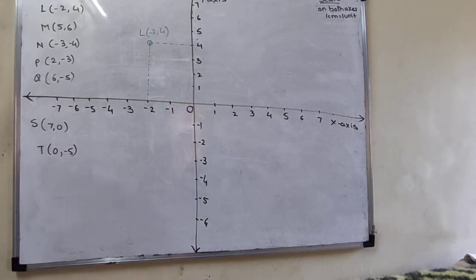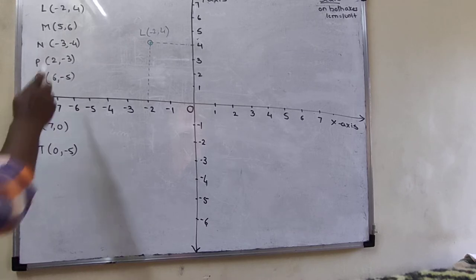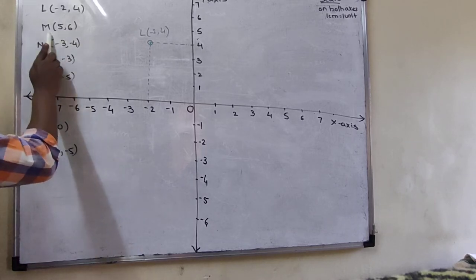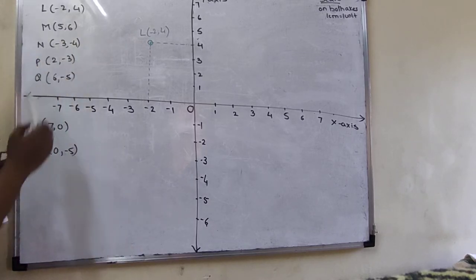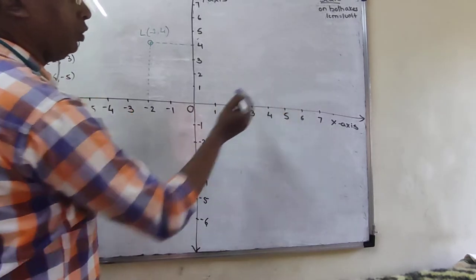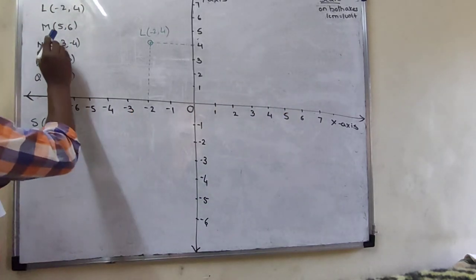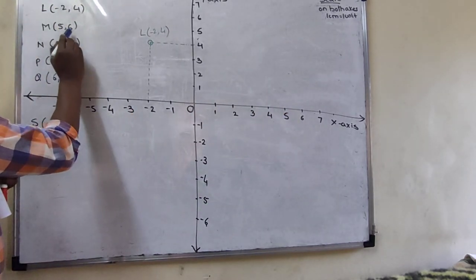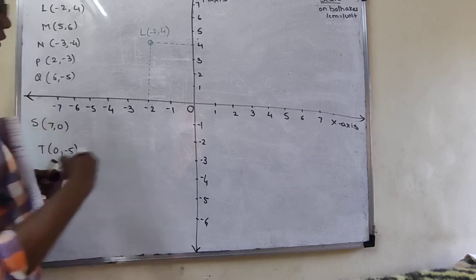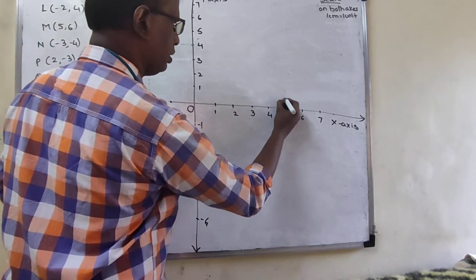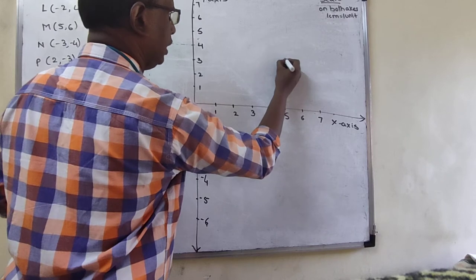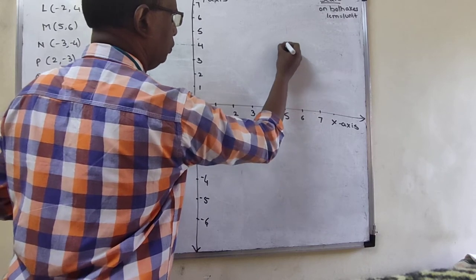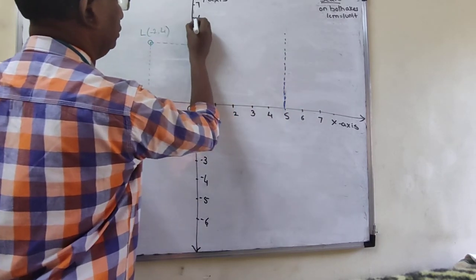The second point is M(5, 6). Both coordinates are plus, so it is in the first quadrant. The x-coordinate is 5 and the y-coordinate is 6. With the help of the scale you mark 5 on x and 6 on y, giving you point M.